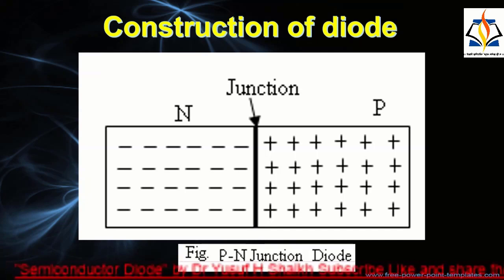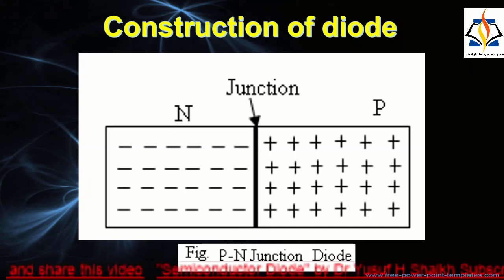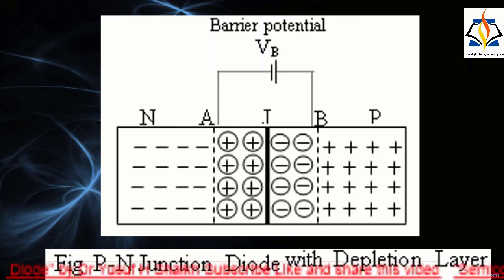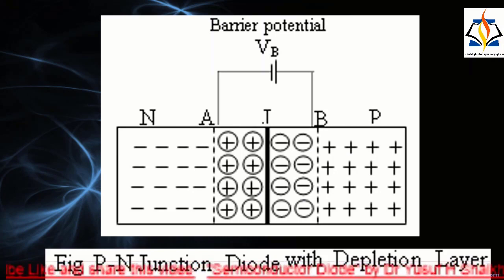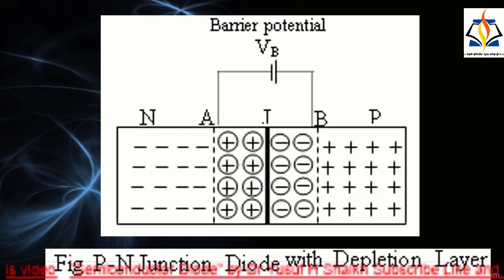This difference in concentration establishes a density gradient across the p-n junction, due to which diffusion of carriers takes place across the junction. Electrons diffuse from the n-region to the p-region and recombine with holes, whereas holes diffuse from the p-region to the n-region and recombine with electrons.